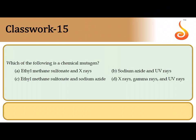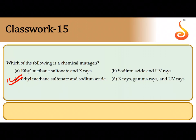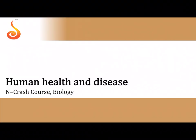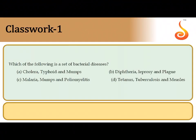The fifteenth question: which of the following is a chemical mutagen? Among all the options, ethylmethane sulfonate and sodium azide are chemical mutagens. All other options have physical mutagens like X-rays, UV rays, and gamma rays. The only option that includes both chemical mutagens is the third option.